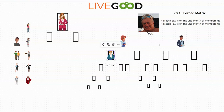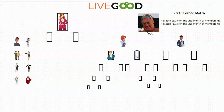You always have to consider that your matrix starts with your first two people, then their two people, then their two people, then their two people. So let's jump back into placement. My next person would go directly to her spot — we bring her forward, and then her two people are placed.